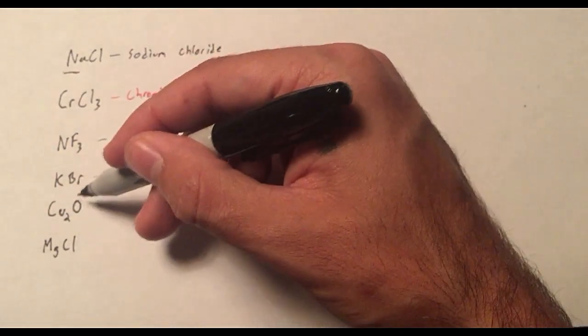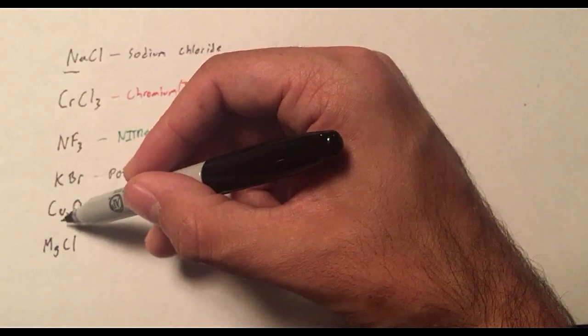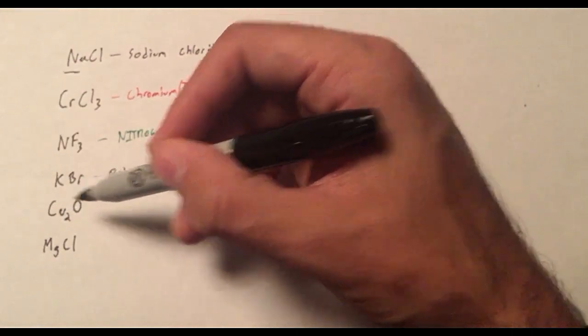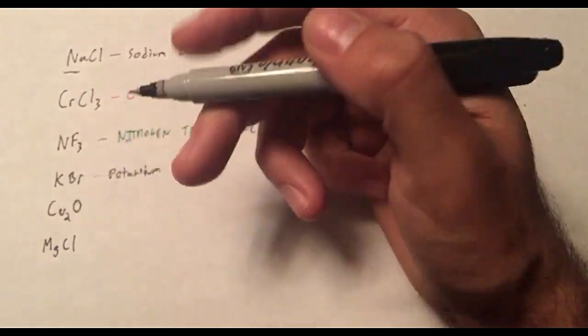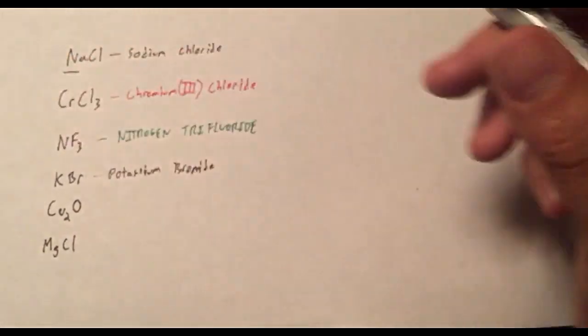Cu2O. We know that oxygen has a charge of two minus. Copper, therefore, if there's two of them, must have a charge of plus one. So the formula is telling us what the charge of copper is, if it's written correctly.